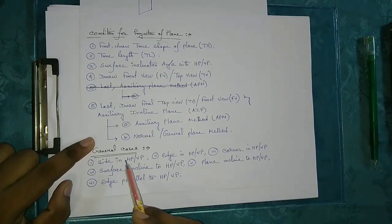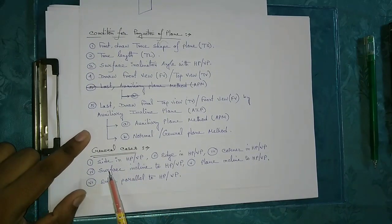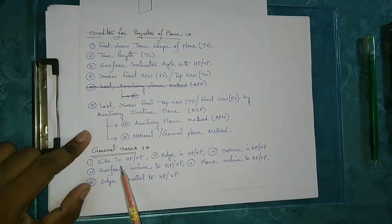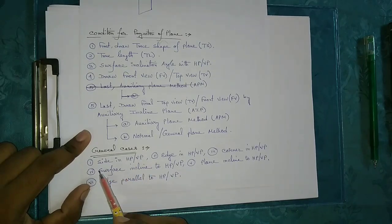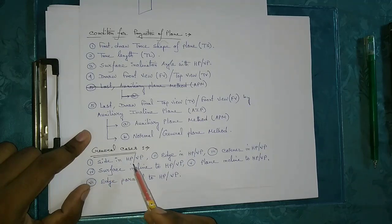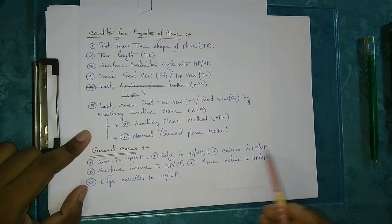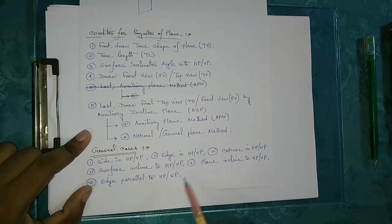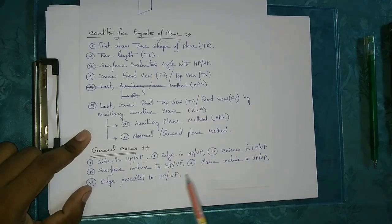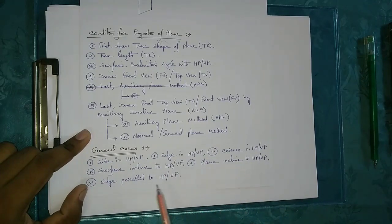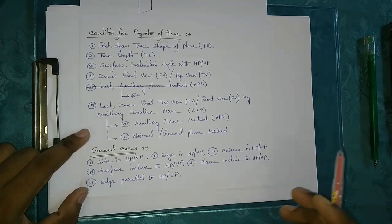There are 6 types of cases in our problems. The first case is side in HP or VP — for example, a square plane with its side in HP or VP, or its edge in HP or VP. Other cases include corner in HP or VP, surface inclined to HP or VP, plane inclined to HP or VP, and edge inclined to HP or VP.